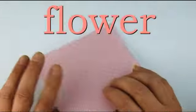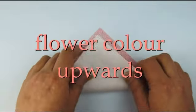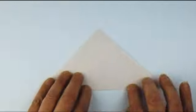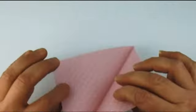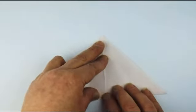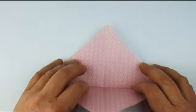And now we're going to make the flower. We start with the coloured side upwards and we fold two diagonals. Open out,